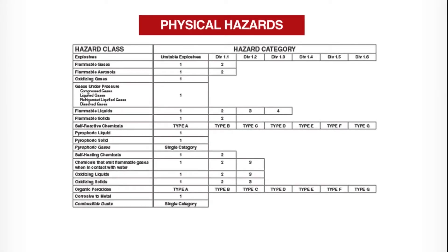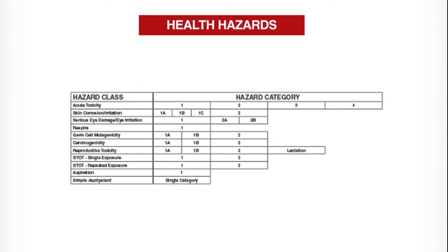Under HAZCOM 2012, hazards are broken down into classes, and classes are broken down into categories which indicate the severity of the hazard within each class. This table shown here represents the physical hazard classification structure adopted by OSHA. You will notice that not all classes have the same number of categories. In the health hazard classification structure, notice that aspiration hazards have a single category, while carcinogens are broken into two categories, and acute toxicity is broken into four categories. There are also subcategories for some classes.